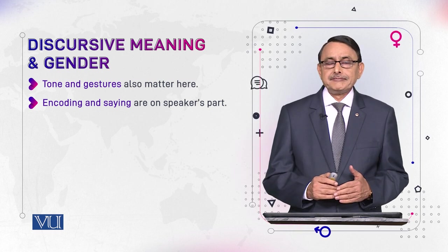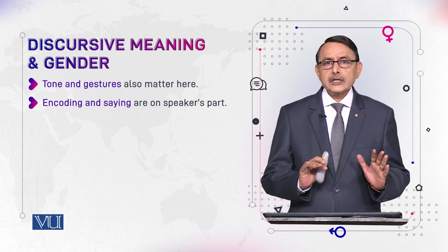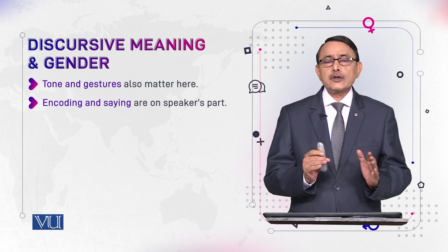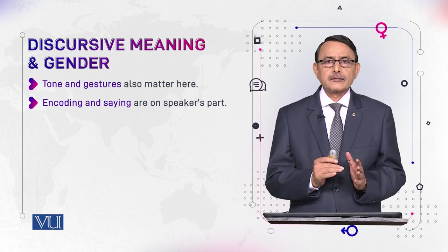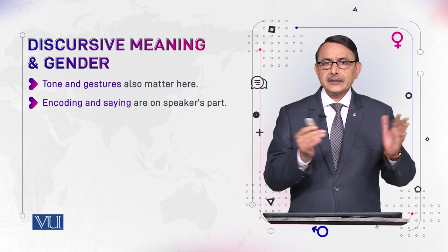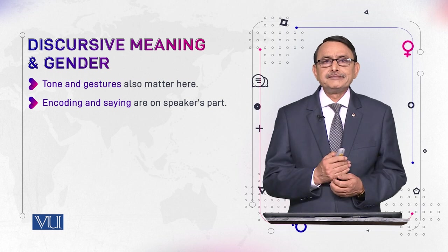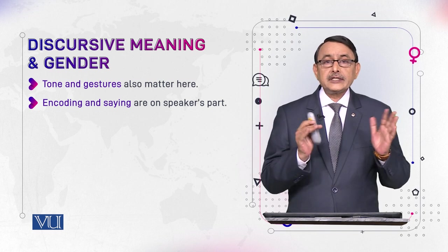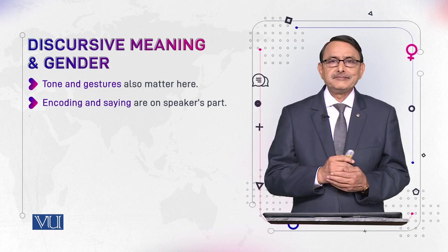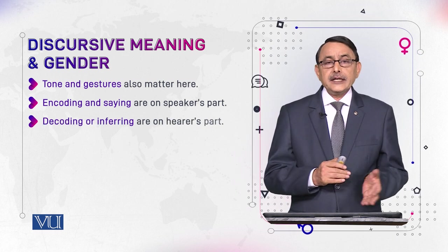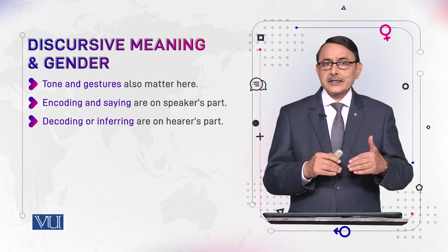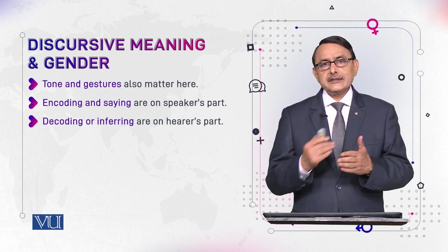From these components, we can understand the composition of discourse meaning according to the role of the participants — who does what in the construction of meaning? Encoding and saying is done by the speaker, while decoding or inferring the message is done by the hearer.